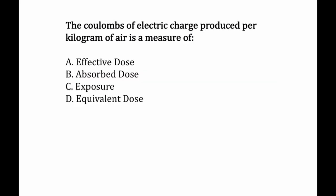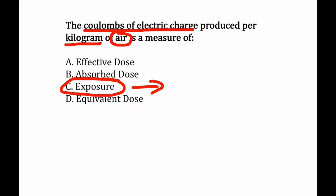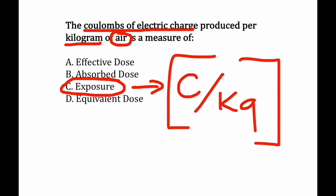Here's the first question — not really a mathematical problem, but it tests definitions. The coulombs of electric charge produced per kilogram of air is a measurement of which of these? The key words here are coulombs of electric charge per kilogram of air. When we see the word air, we know we're probably talking about exposure or air KERMA. The answer is exposure, because exposure is equal to the coulombs of charge per kilogram in air — that is our definition of exposure.